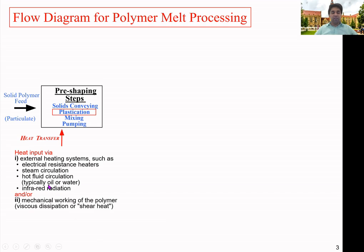Apart from external heat, there can be internal heat generation inside the machine — called mechanical working of the polymer. One mechanism is frictional heat generation as solid materials rub against each other or against the processing chamber surfaces. In polymer extruders, there is relative motion between the screw surface and barrel surface, generating frictional heat. As material absorbs heat and becomes viscous or spongy-like, there can also be viscous heat dissipation.